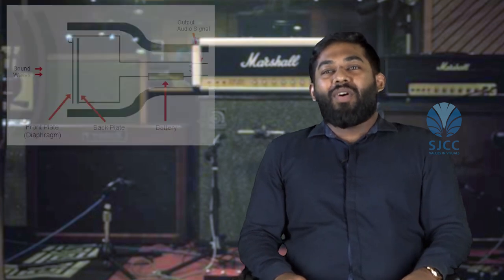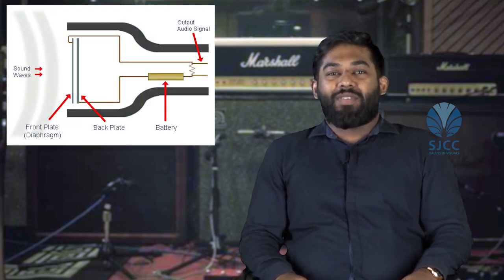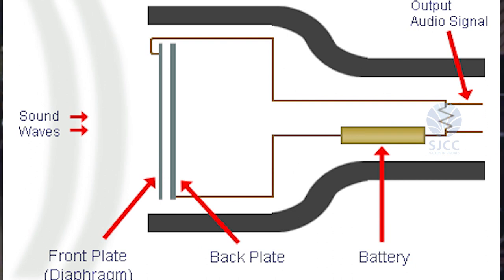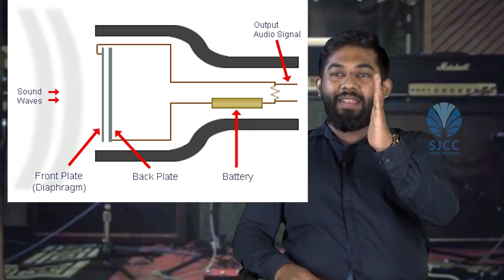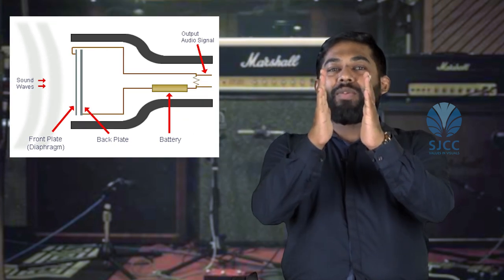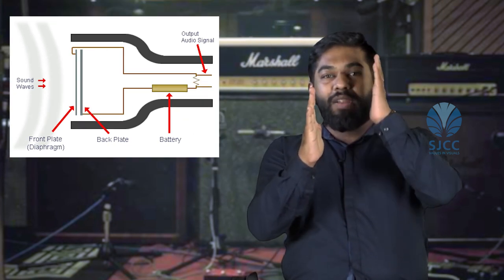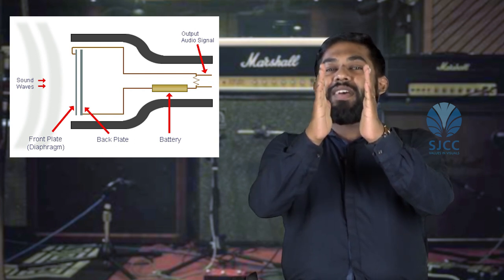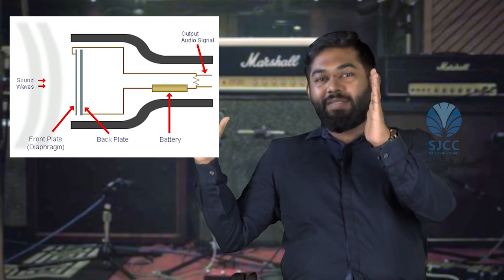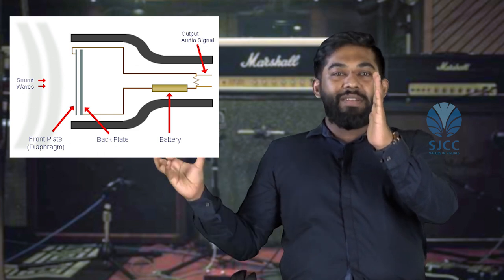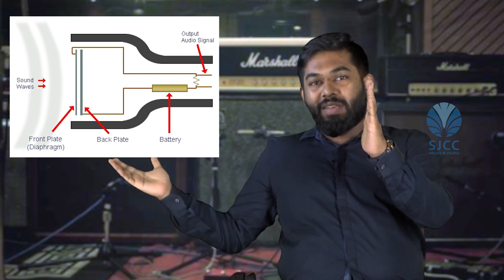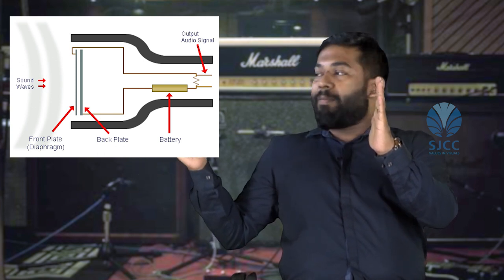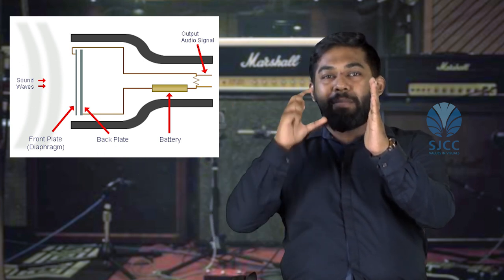Condenser microphones, also known as capacitor microphones, have three parts: a front plate, a back plate, and a power supply. The front plate is thin and the back plate is kept parallel to it. Both plates are charged — one is positively charged, the other is negatively charged. This charge comes from a power supply known as phantom power, which can be an external power supply like from a mixer or interface, or in rare cases, a battery inside the mic.